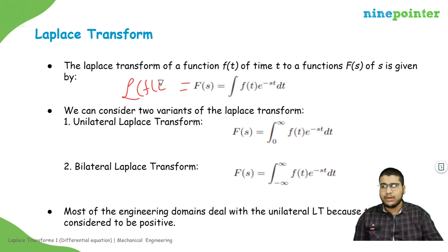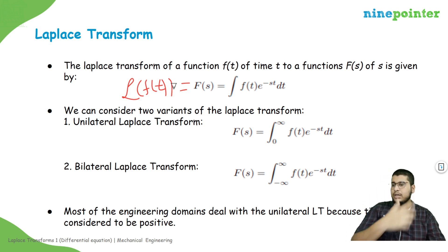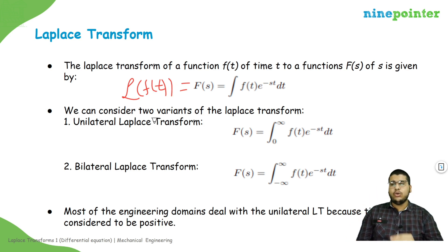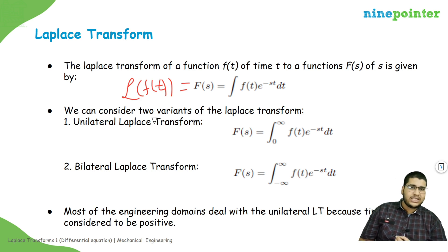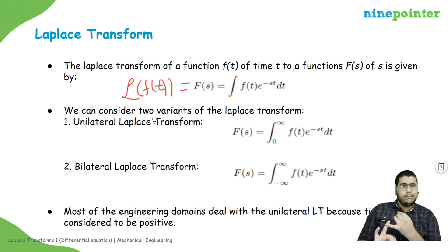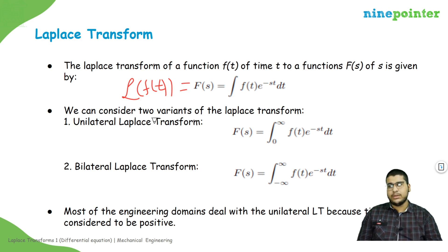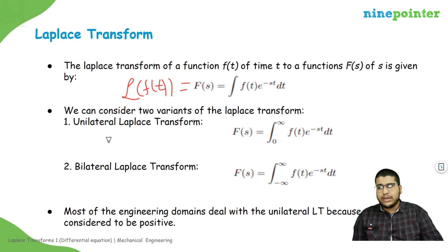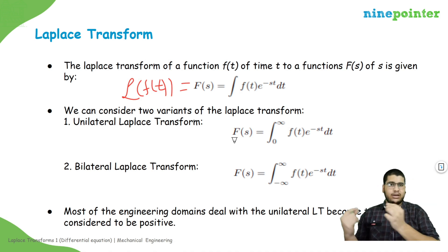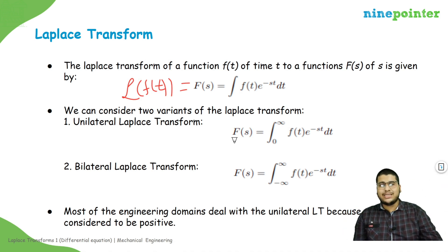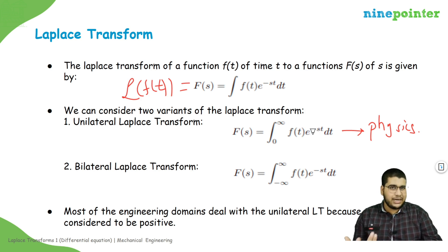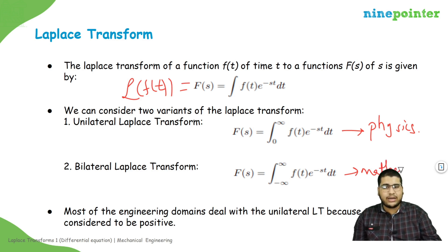Laplace transform has two important variations: the unilateral Laplace transform and the bilateral Laplace transform. The only difference is the domain of integration — in the unilateral transform we integrate from zero to infinity, and in the bilateral we integrate from minus infinity to infinity. In physics, where we consider t as time, we majorly use the unilateral transform since time is greater than zero, while mathematics majorly deals with the bilateral transform.